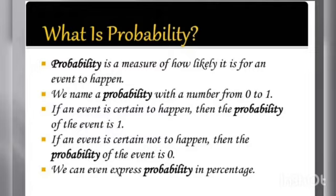If the event is certain to happen, then the probability of the event is 1. If the event is certain not to happen, then the probability of the event is 0. We can also express the probability as a percentage.